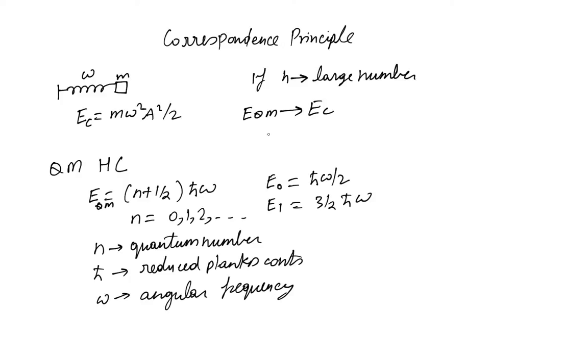If we equate the two equations, which means (N plus 1/2) H bar omega equals M omega square A square over 2, this gives us that N should be equal to M omega A square over 2 H bar minus 1/2 for this to hold true.